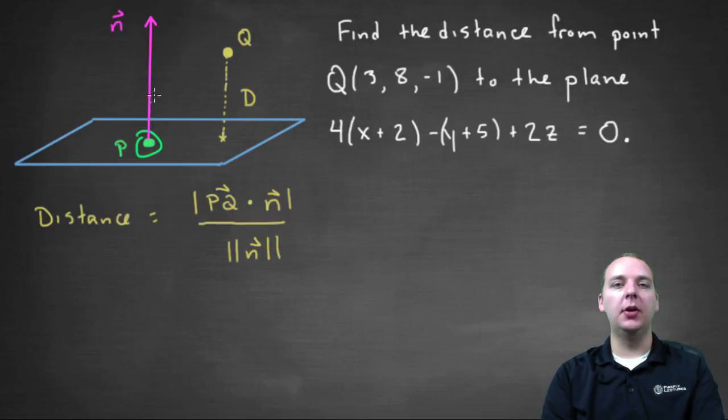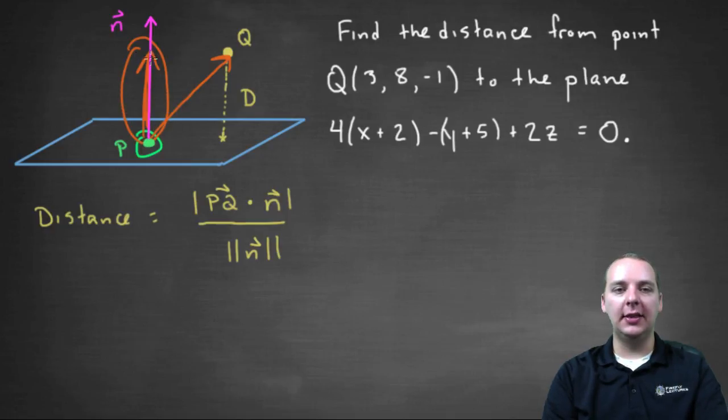And you can also quickly read off a normal vector to the plane. In our case it's (4, -1, 2). And then using these two things, here's how the idea went. You can create a vector PQ, and then project it onto the normal vector. And then you can take the magnitude of the projection and you're done. This distance here, the magnitude of the projection, is the same as the distance from Q to the plane.